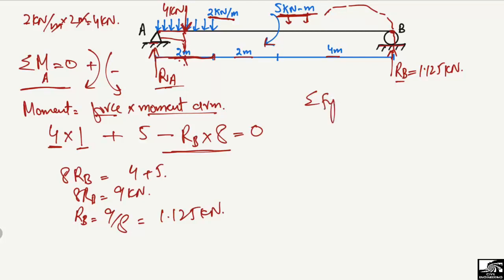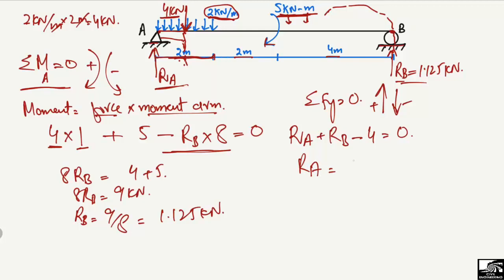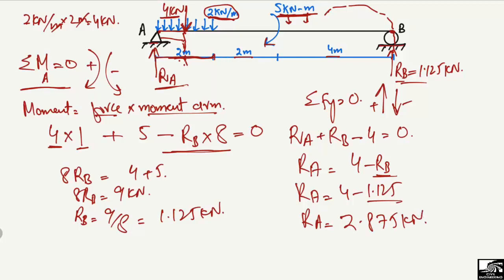To find R_A, we use the vertical equilibrium equation: summation of vertical forces equals zero. Upward forces are taken as positive and downward forces as negative. R_A + R_B − 4 = 0. Substituting R_B = 1.125 kN: R_A = 4 − 1.125 = 2.875 kilonewtons.